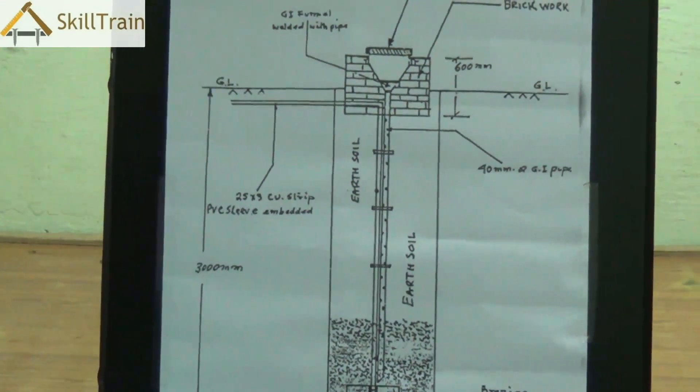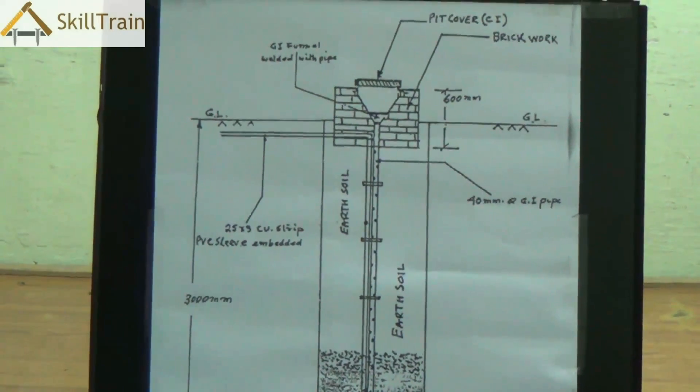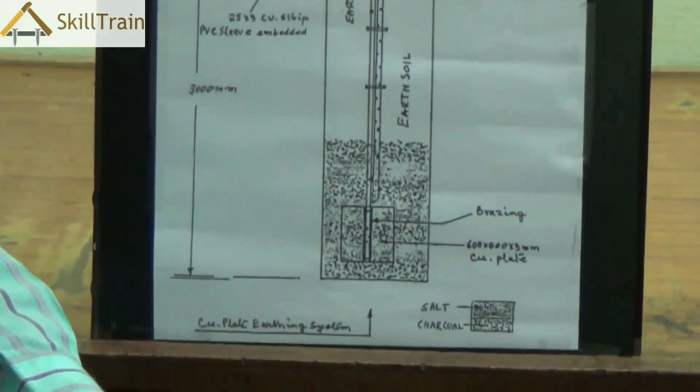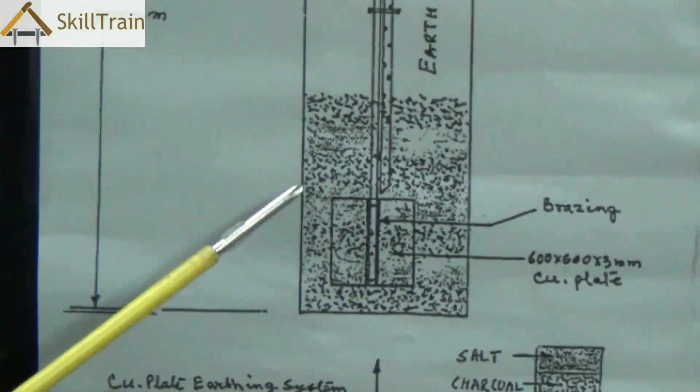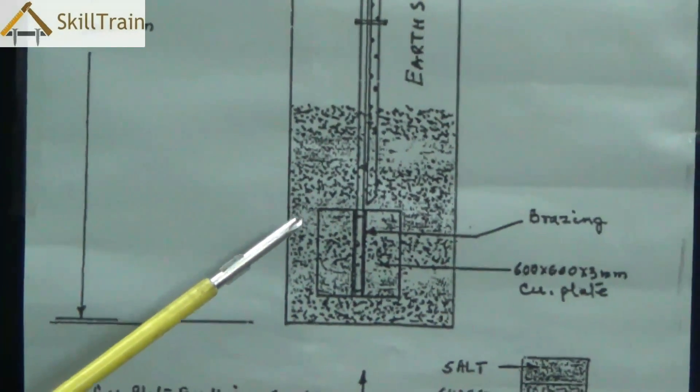In order to do this type of earthing we dig around 4 to 7 feet inside the soil from the ground level. We go deeper to about 4 to 7 feet and underneath we place a copper plate or a GI plate.